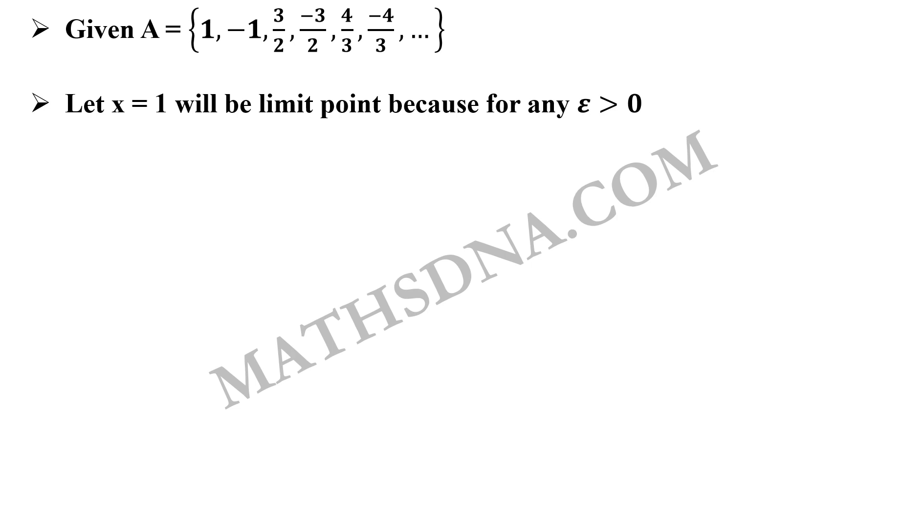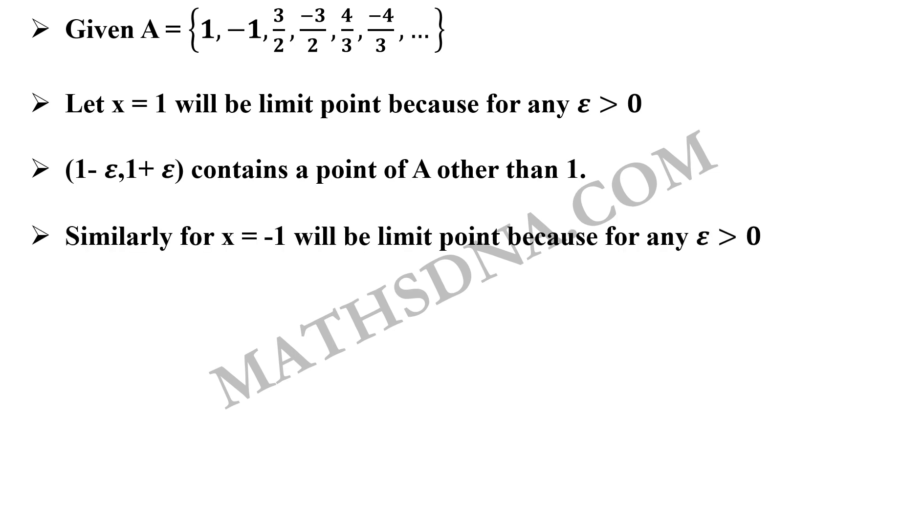Now, this will be a limit point of A because for any epsilon greater than 0, when you take (1 - epsilon, 1 + epsilon), it contains a point of A other than 1 because the points 3/2, 4/3, 5/4, 6/5, all these points will come near 1. And no matter how small epsilon you take, at least 1 point will be contained in that open interval. So, 1 will be a limit point.